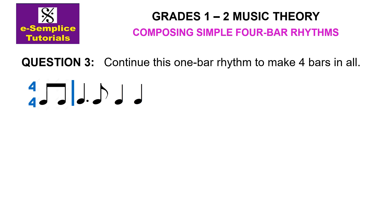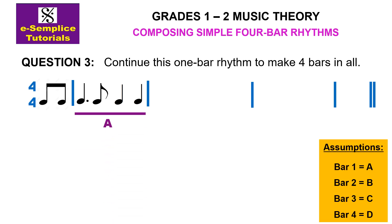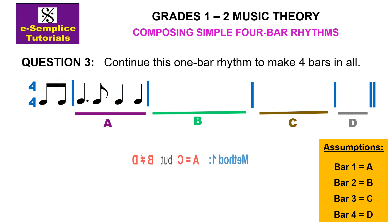Question three: continue this one-bar rhythm to make four bars in all. You are only given bar one — note that any incomplete bar at the start is not bar one. So you need to create bars two, three, and four. Using method one — A equals C, B does not equal D — copy the content of A into C.